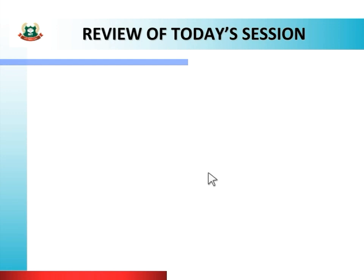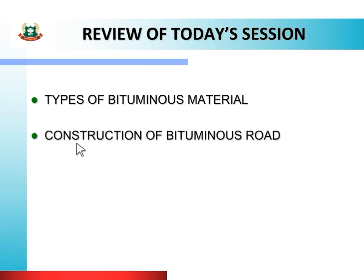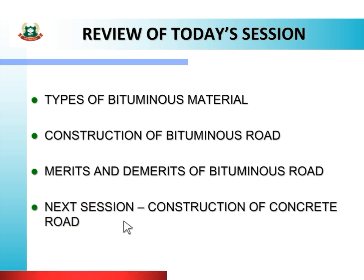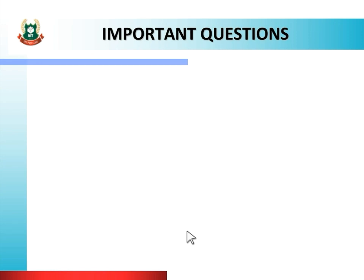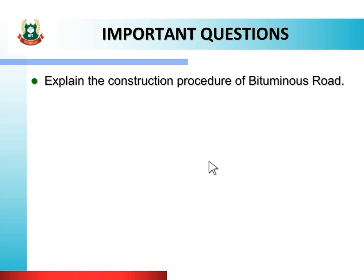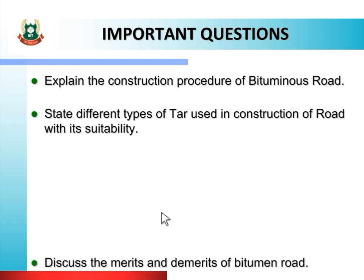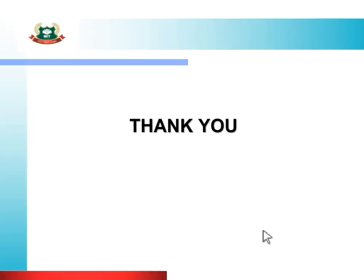In today's session we studied about types of bituminous material, construction of bituminous road, and merits and demerits of bituminous road. In the next session we will see about construction of concrete road. Important questions on today's topic are: explain the construction procedure of bituminous road; state different types of tar used in construction of road with their suitability; discuss the merits and demerits of bituminous road. Solve these questions as an assignment. If you face any difficulty, watch the video again or contact me. Thank you for watching the video.